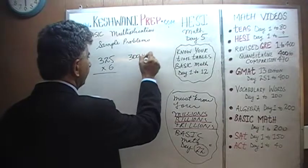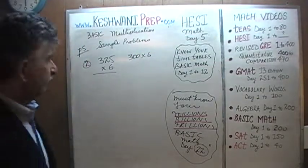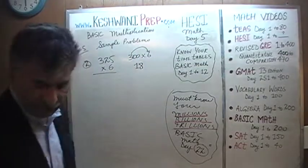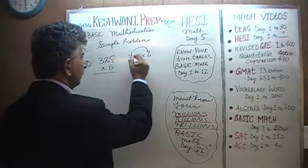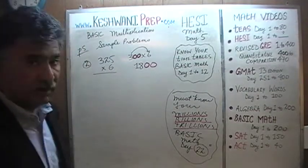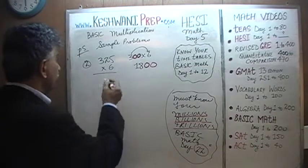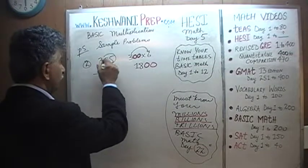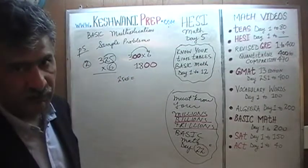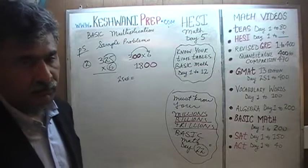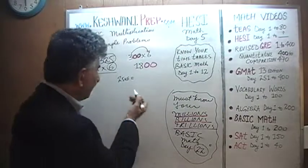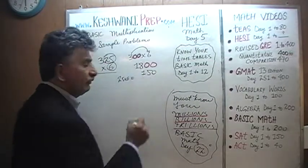300 times 6: three times 6 is 18, and since we have 300 we have two zeros, so that's 1,800. Now we have to do 25 times 6. Think in terms of money — 25 cents is a quarter; if I have six quarters I have $1.50. So 25 times 6 is 150.